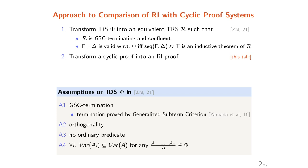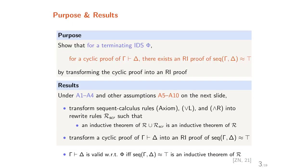A sequent is valid with respect to phi if and only if the corresponding equation is an inductive theorem of R. The second step, which is the main topic today, is to transform a cyclic proof into a rewrite induction proof. Finally, we will transform a rewrite induction proof into a cyclic proof as future work. Our purpose today is to show that for a terminating inductive definition set phi, for a cyclic proof of a sequent, there exists a rewrite induction proof for the corresponding equation.